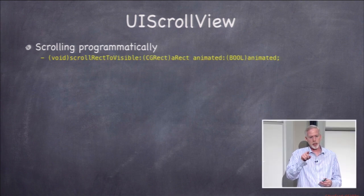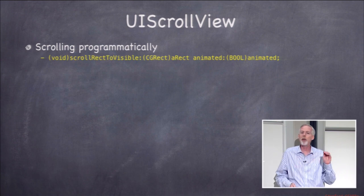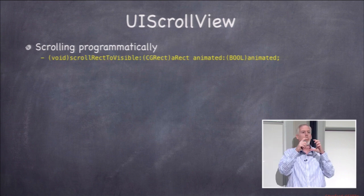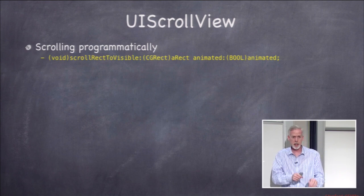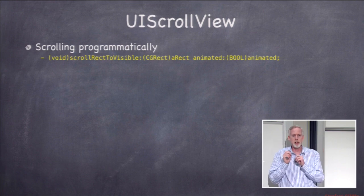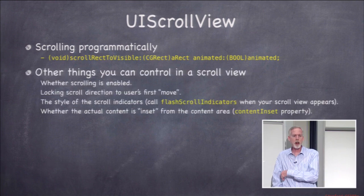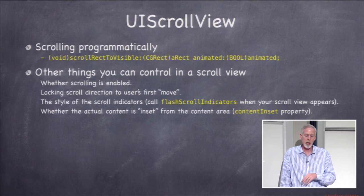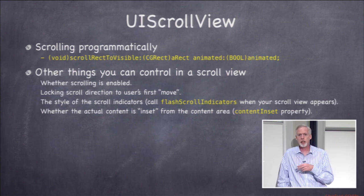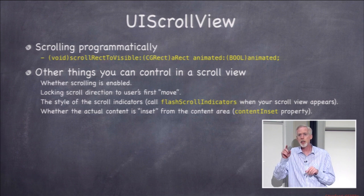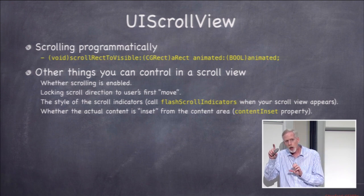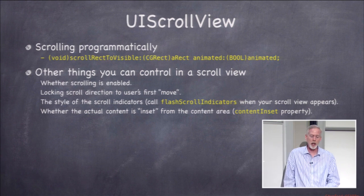Most scrolling is done by the user with a touch pan gesture, but you can also scroll programmatically using scrollRectToVisible:animated: — you specify a rectangle in the content area and it scrolls to make it visible, typically animated so it slides rather than jumps. There are many other controllable properties in UIScrollView — whether scrolling is enabled, whether horizontal or vertical — plus scroll indicators (not scroll bars) that flash to show your position. Check UIScrollView's documentation for all of them.